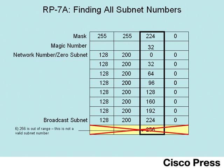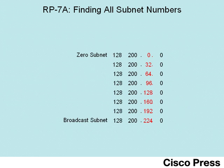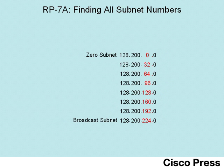The previous subnet we had calculated — the one that ends in 224.0 — happens to be the broadcast subnet, which is the last of the eight subnet numbers in this example. You can remove clutter from your workspace and write down the numbers as dotted decimal numbers, noting that the zero subnet is the smallest of these subnet numbers and the broadcast subnet is the largest.